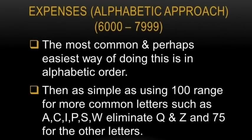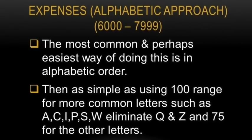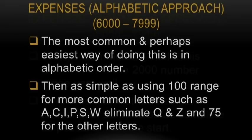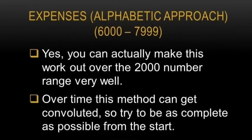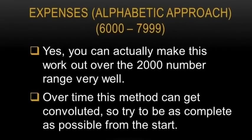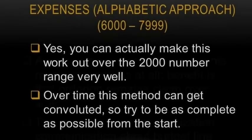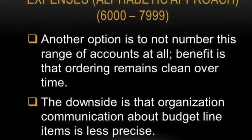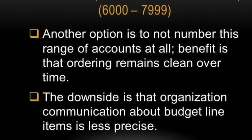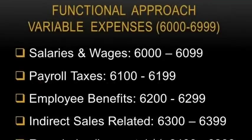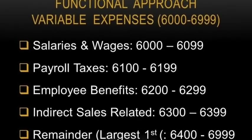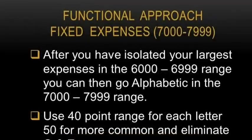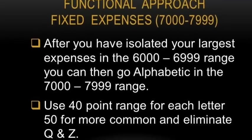The expense portions are always more detailed and intriguing. We make some suggestions here, starting with an alphabetic approach first. An alternative is a functional approach — one which we personally prefer — in which the most controllable and largest expenses are listed first.